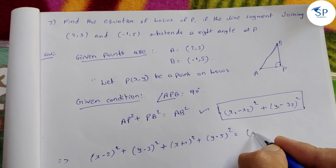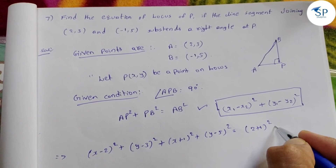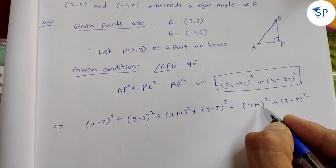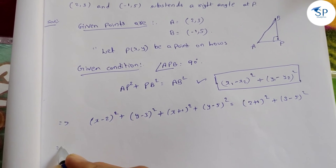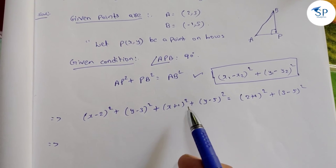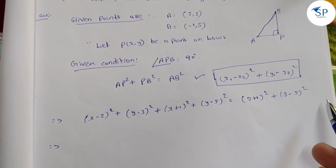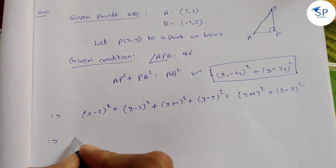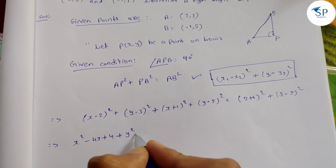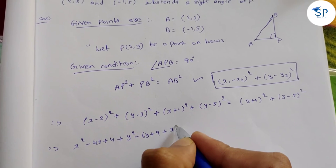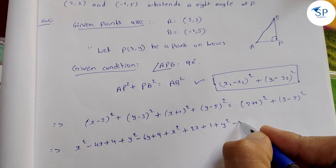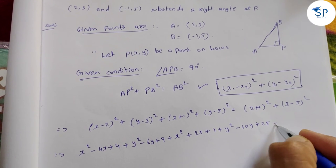This is equal to AB². Using the (a−b)² and (a+b)² expansion formulas: (x−2)² = x²−4x+4, (y−3)² = y²−6y+9, (x+1)² = x²+2x+1, (y−5)² = y²−10y+25, and the right side is 9+4.